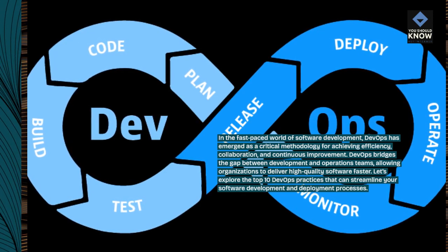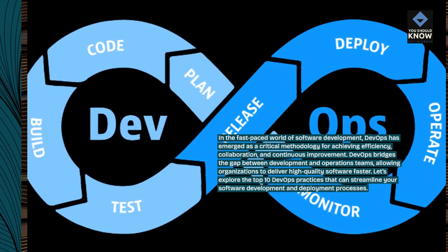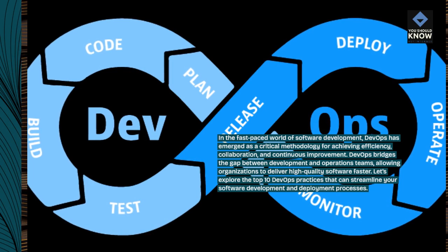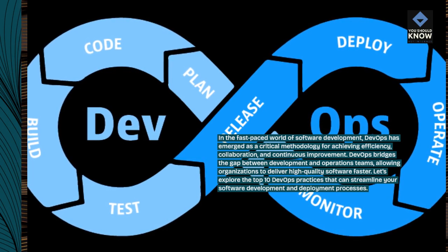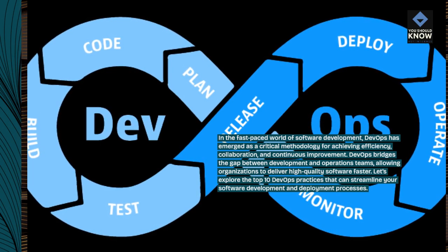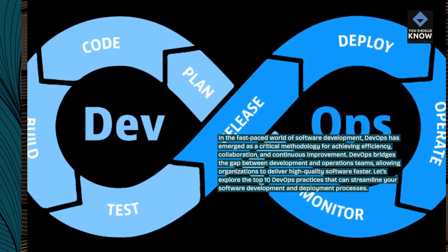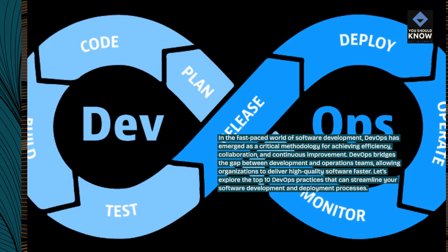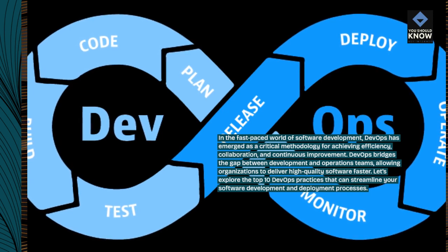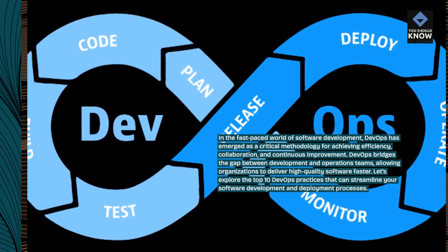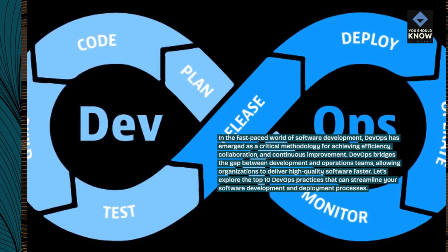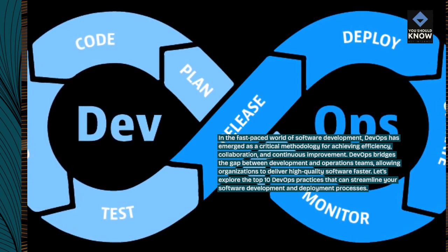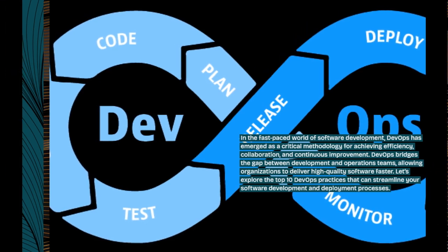DevOps bridges the gap between development and operations teams, allowing organizations to deliver high-quality software faster. Let's explore the top 10 DevOps practices that can streamline your software development and deployment processes.